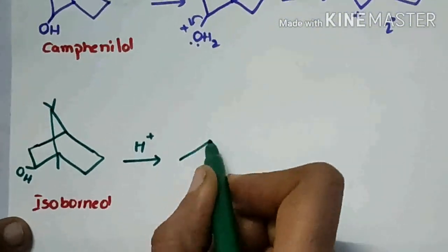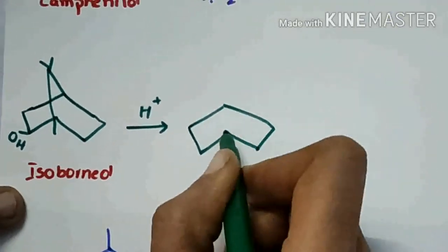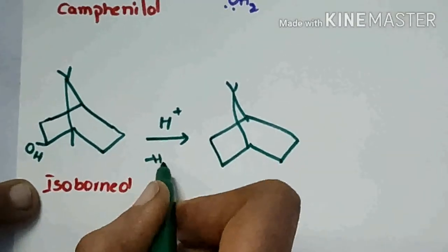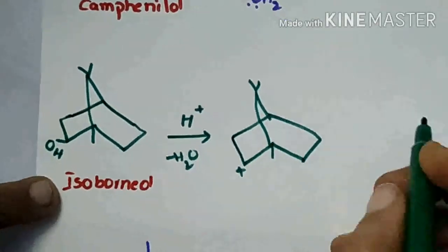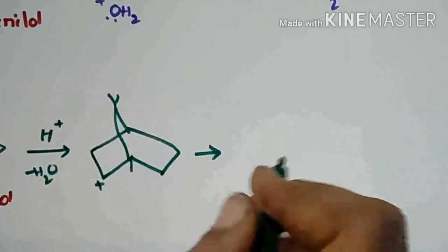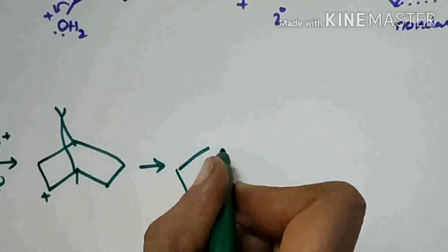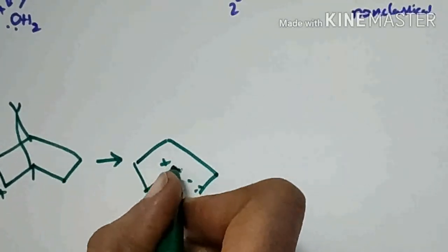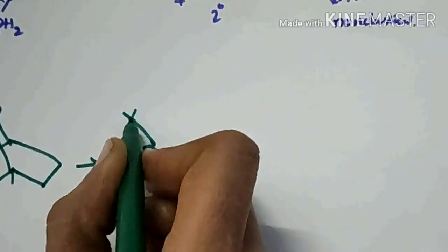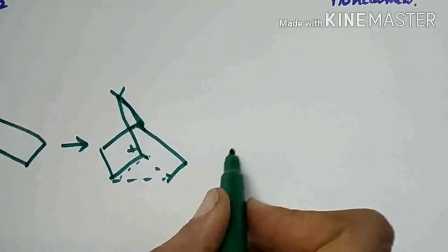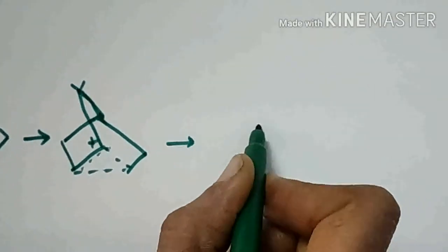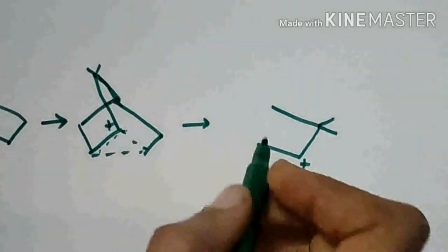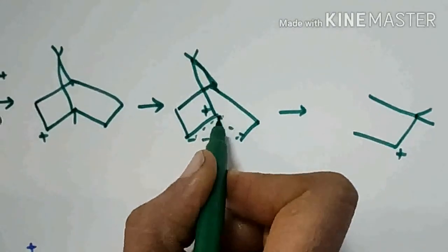Next question: it is isoborneol. It is protonated and it will be removed as a water molecule. So it will form a positive charge here. It is a secondary carbocation and then it will form a non-classical carbocation. It is rearranged — this positive charge will appear here and these are the two bonds, and here one bond is there.